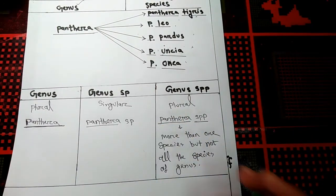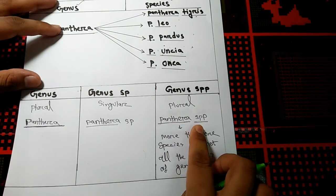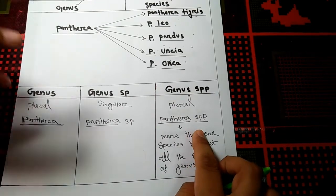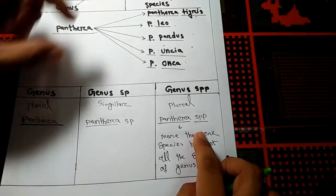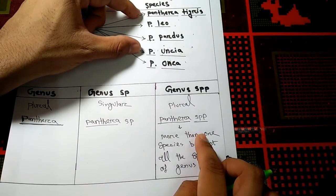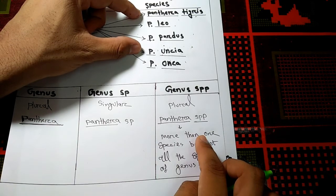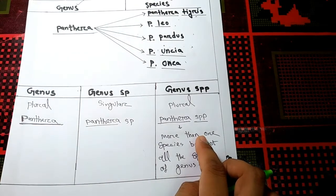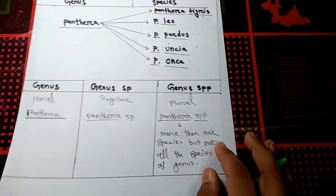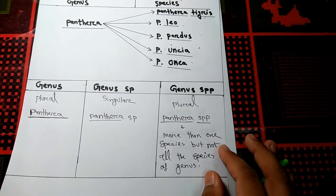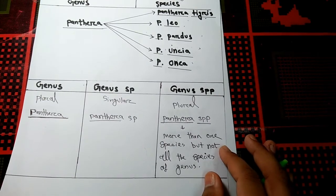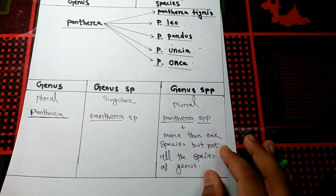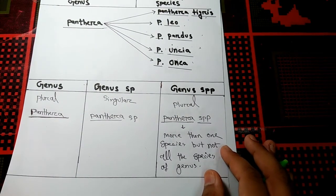For example, by 'Panthera spp.' we might mean four species of Panthera, but not all the species. I hope we now understand the difference between the name of a genus alone, genus sp., and genus spp.